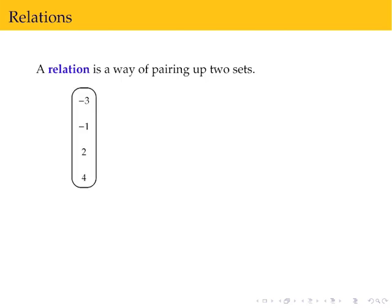So here we have a set and another set, and we can indicate how we pair them up with these arrows. The negative 3 from the first set is paired with the 2 from the second set. And maybe we also pair the negative 1 with the 2, the 2 with the 3, the 4 with the 3, and the 4 with the 4. So there are five pairings between these two sets.